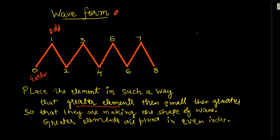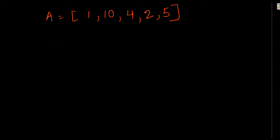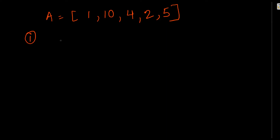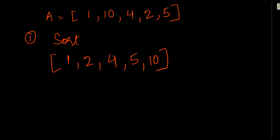If I am placing all greater elements at even index, then I should keep all smaller elements at odd index. To check whether an array is creating a wave or not, first I need to sort the array. Then I can swap adjacent elements in pairs. For example, after sorting I get 1, 2, 4, 5, 10.